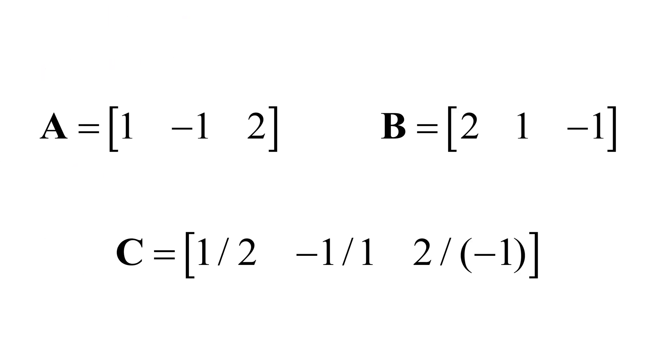We have two row vectors A and B and we would like to create a row vector C by having element-by-element division. First of all, the first element 1 half comes from 1 divided by 2 and the second element minus 1 comes from minus 1 divided by 1. And third one is related to 2 divided by minus 1. So in MATLAB window, I can create row vector A, 1 minus 1 and 2, row vector B, 2, 1 minus 1. Again, you can use period for element-by-element division.